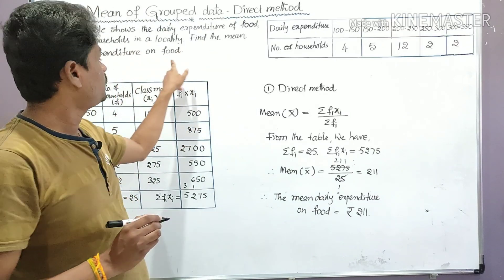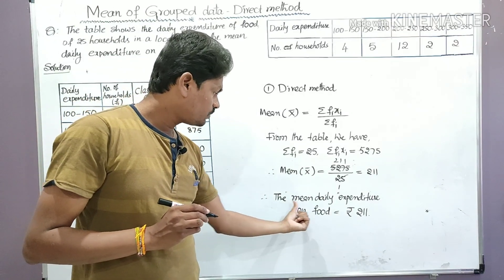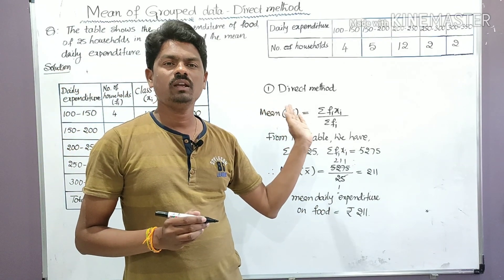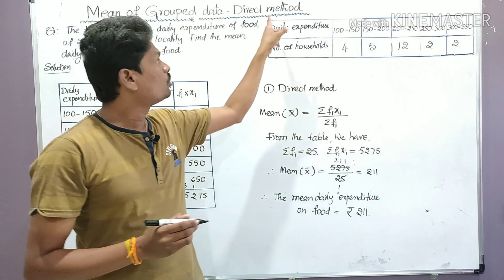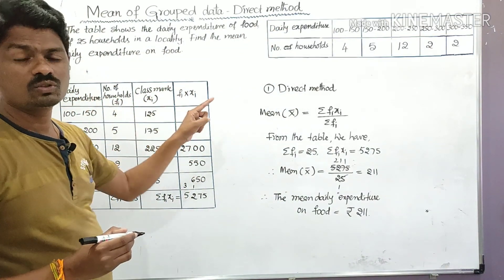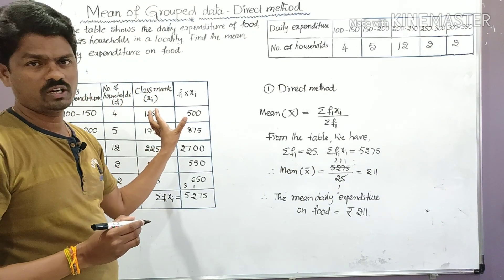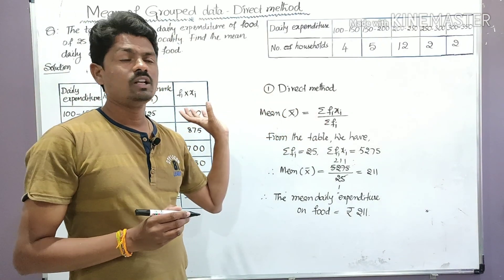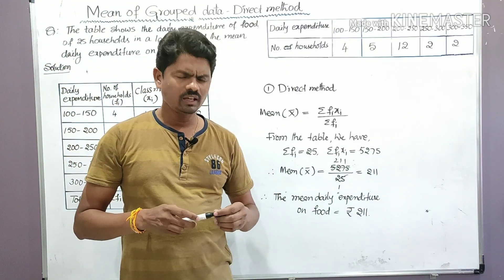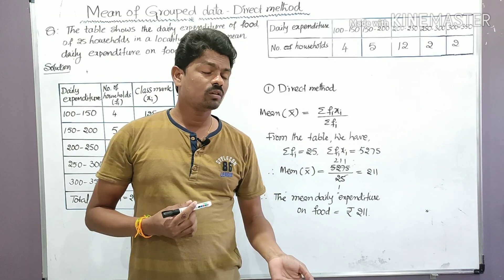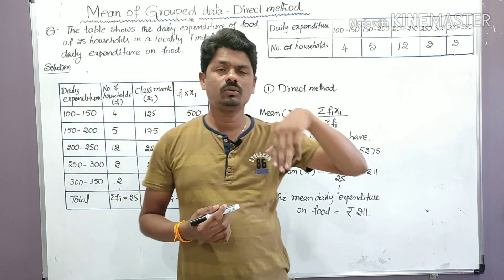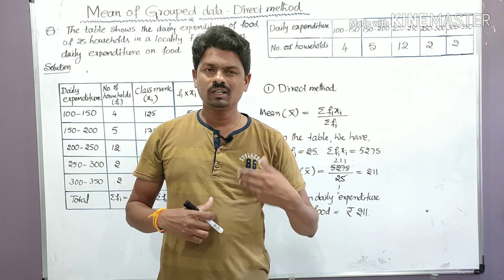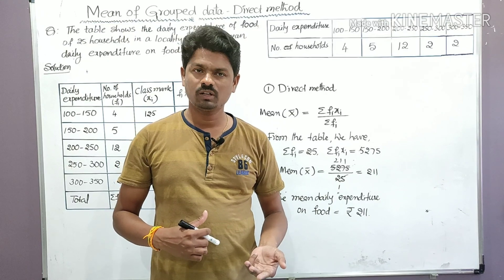So the mean daily expenditure on food is ₹211. This is how we find the mean of grouped data using the direct method. Remember the four-column tabular form and the formula with all the terms. In the next class, we will learn how to find the mean using the assumed mean method and the step deviation method. Subscribe to the channel 'Learn More Math' by Varakmar Vatanala for the latest updates.